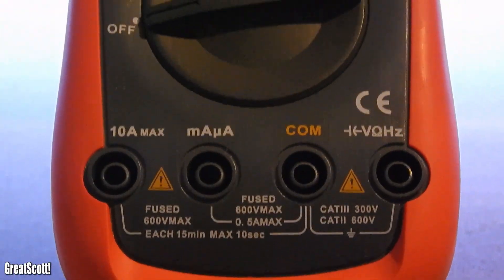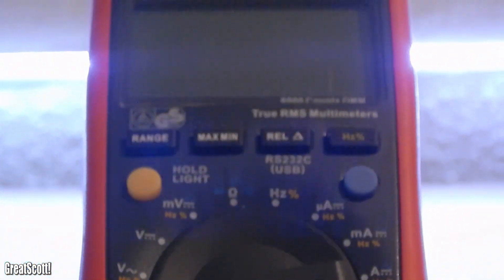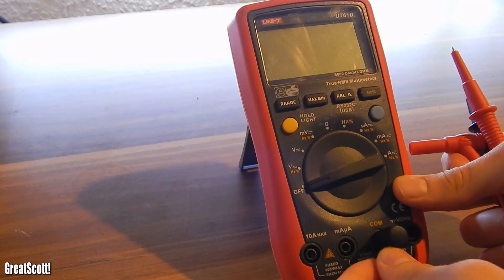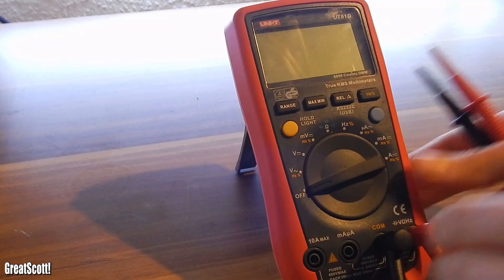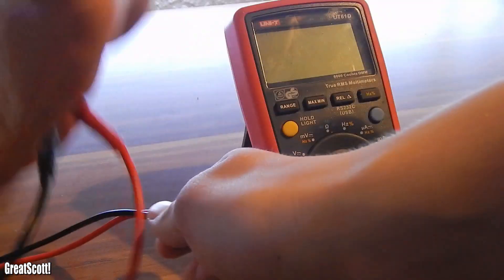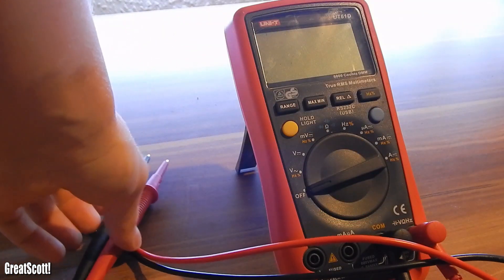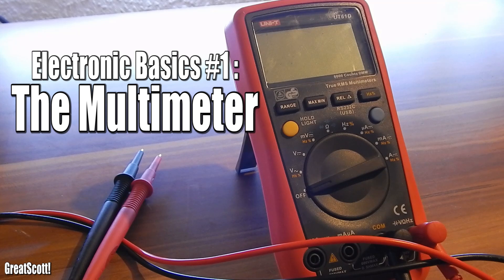A multimeter is capable of measuring all those important parameters. It's easy to use and the price for a simple one is affordable. That's why I'm going to show you how to use a basic multimeter to measure voltage, current and resistance.